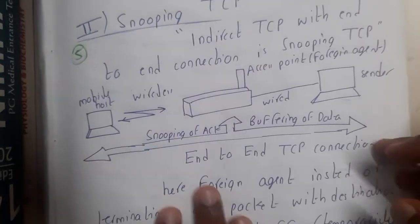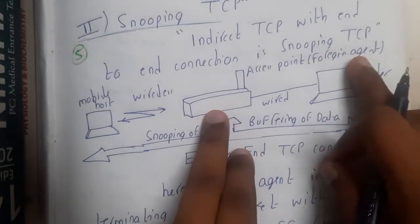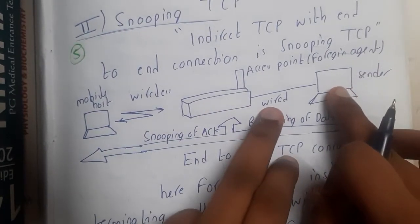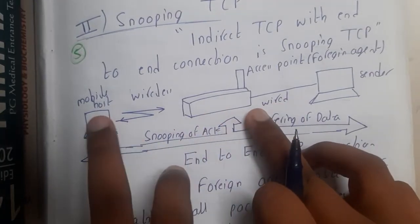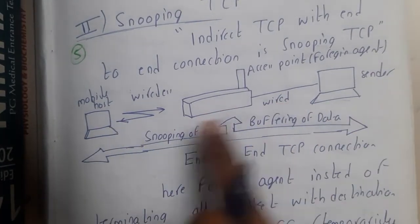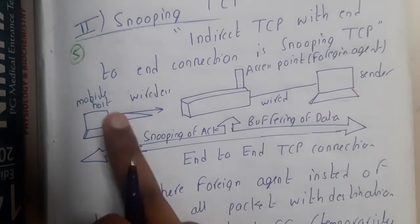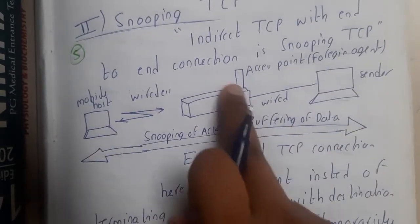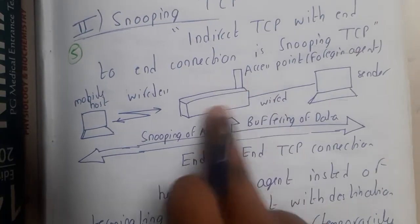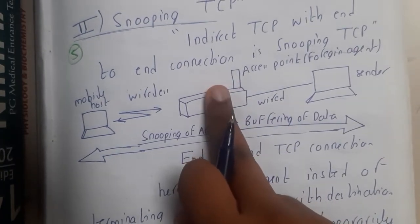If you observe the diagram, everything seems to be the same — we have a mobile host, an access point, and a foreign agent with a sender. The sender sends data over a wired connection, and the access point sends over wireless. The small update here is that there is a direct connection between the sender and the mobile host. The access point is just a mediator.